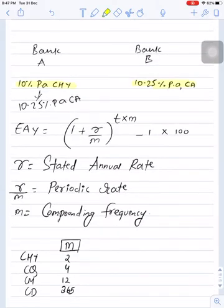Now we can put all these calculations in the formula. The formula to calculate effective annual yield is 1 plus R upon M, raised to T into M, minus 1, into 100.